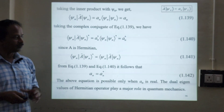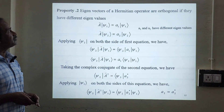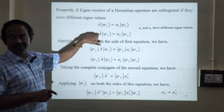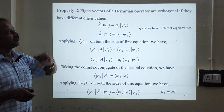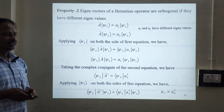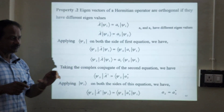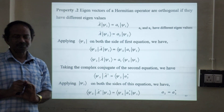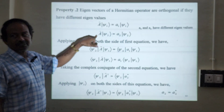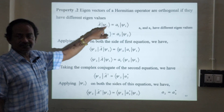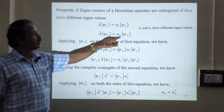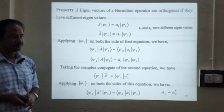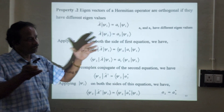The real eigenvalues of Hermitian operators play a major role in quantum mechanics. The second property: eigenvectors of a Hermitian operator are orthogonal. If two eigenvectors have different eigenvalues, then they are orthogonal to each other. We consider two eigenfunctions — each eigenfunction has its own eigenvalue, which is non-degenerate.